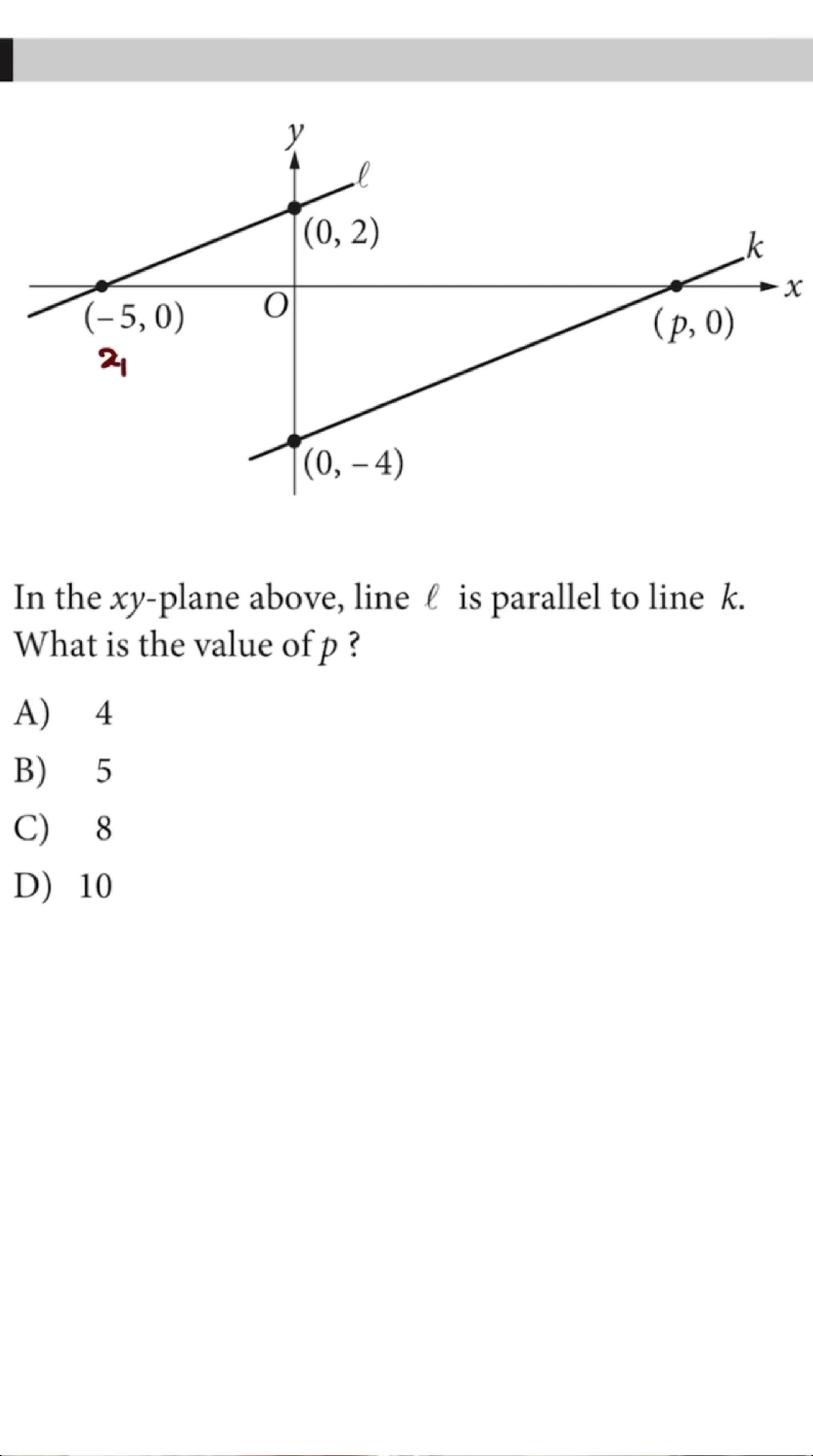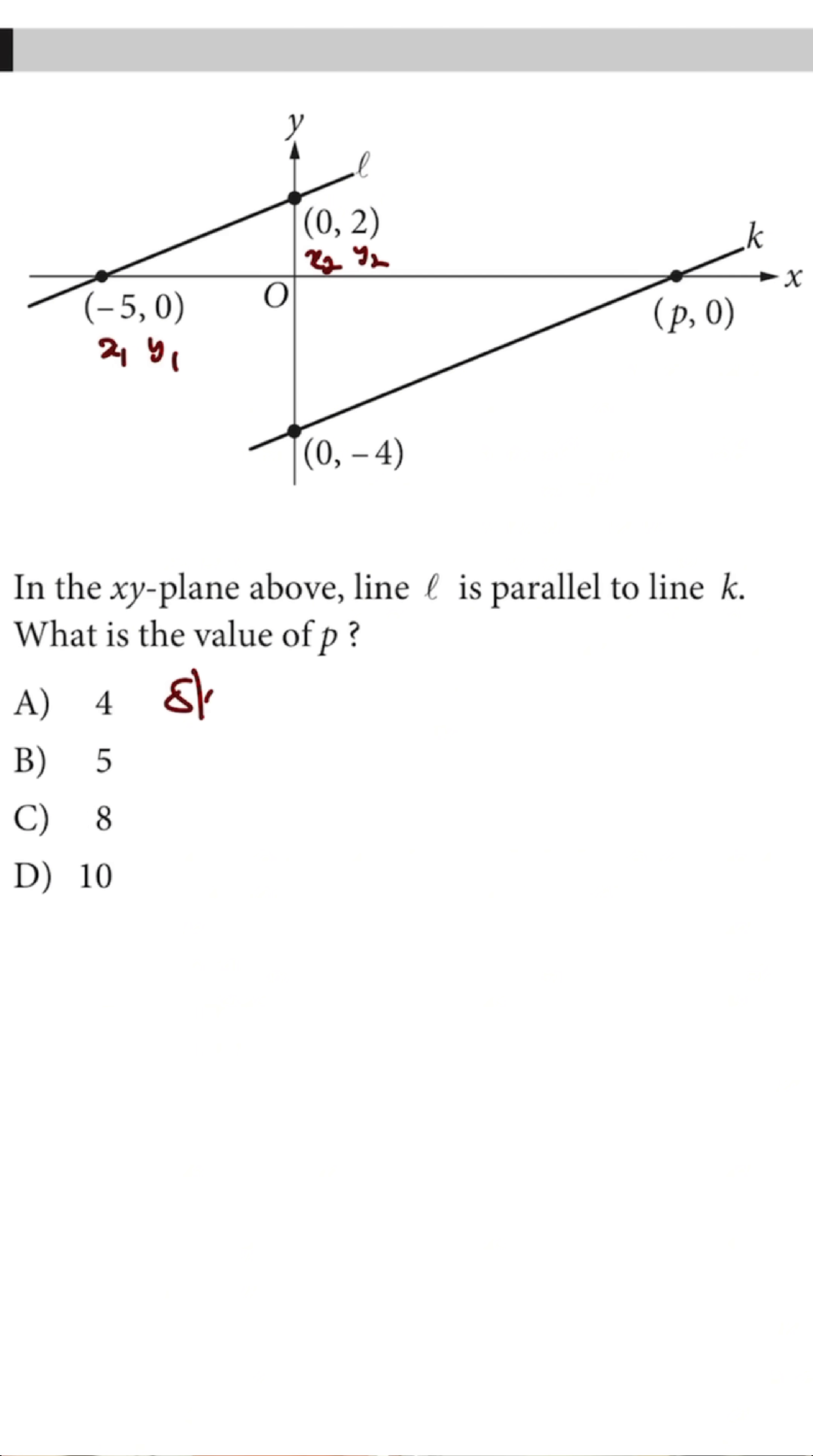So this is X1, Y1, X2, Y2. So your slope will be equal to Y2 minus Y1 over X2 minus X1, which will be equal to 2 minus 0 over 0 minus negative 5, which gives us 2 over positive 5. So this is your slope. And you're going to equate this as to how you will be finding the slope of line K.